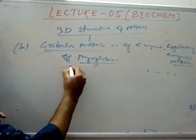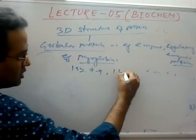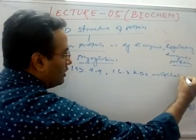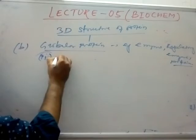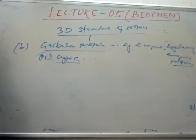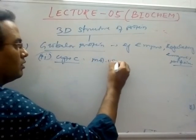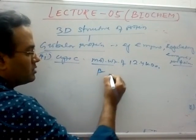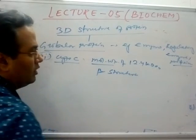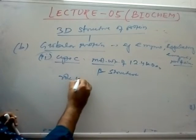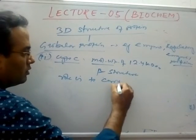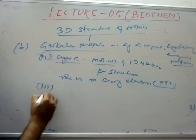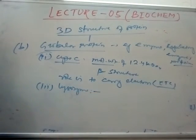Myoglobin has 153 amino acids and a molecular weight of 16.7 kilodaltons — it is a small protein made up mostly of alpha-helical structure. The next example is cytochrome C, which has a molecular weight of 12.4 kilodaltons. Its role is to carry electrons and it is present in the electron transport chain.